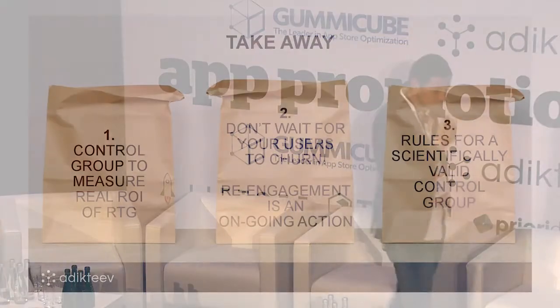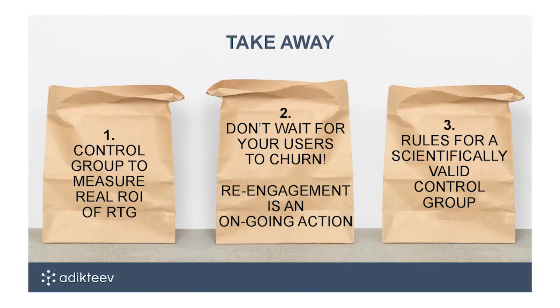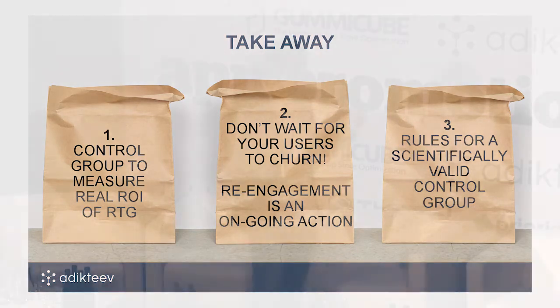There are three things to take away. First, the control group — there are a few different ways to set it up. You can do a standard control and target group. You can do PSA — public service announcements — where instead of just holding back a group and showing them nothing, you show them ads for a charity like the Red Cross, and compare those two. You can also look at exposed versus unexposed users. There are a lot of different ways to do it.